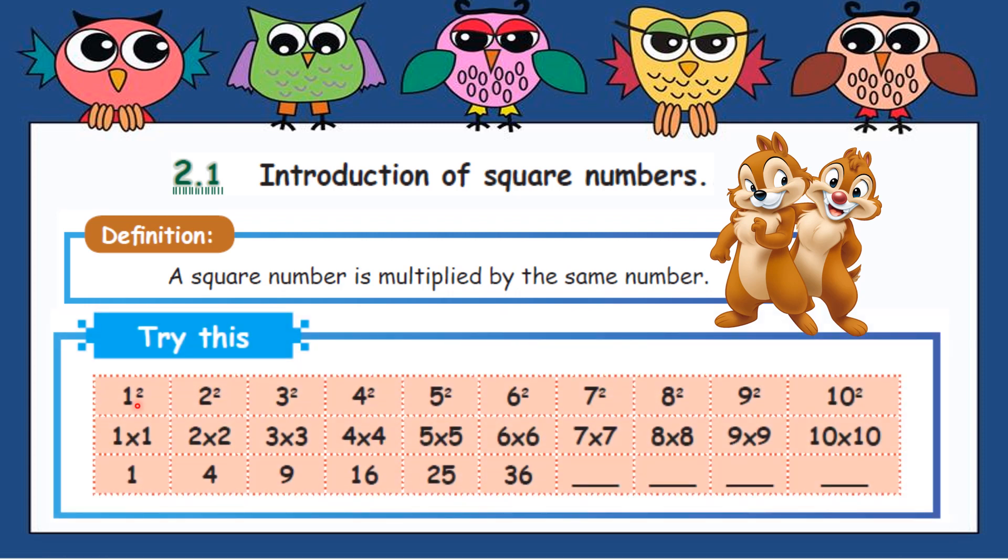Try this sum. See here, one square, one power two, that means one must be multiplied two times. This is the same number, there are no different numbers. So one times one is one. Come here, two square, two power two, that is two must be multiplied by two times, so two times two is four.